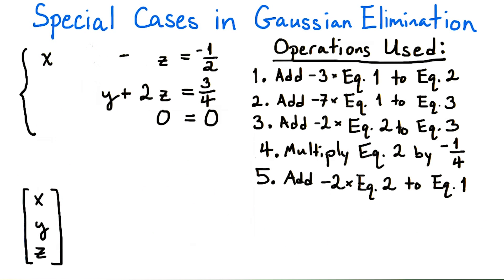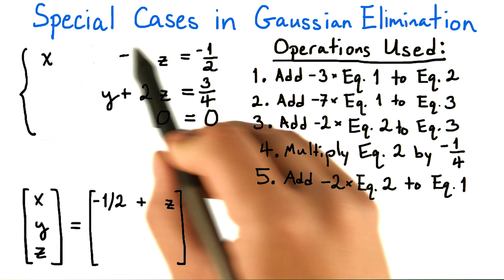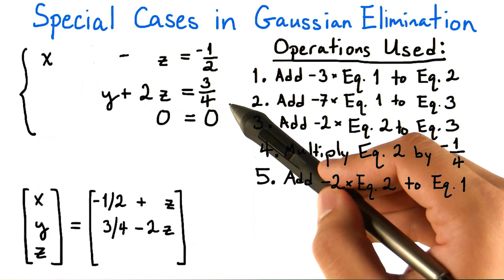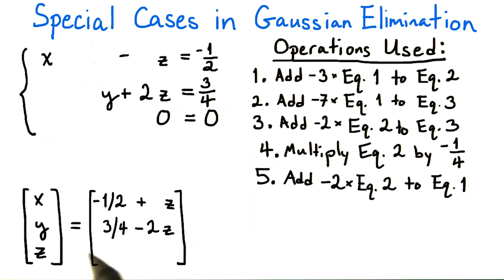We can now parametrize the solution set in the following way. Suppose x, y, z is a point in the solution set. Then x will have to equal negative 1 half plus z by rearranging this top equation. Similarly, by rearranging the second equation, we see that y has to equal 3 fourths minus 2 times z.